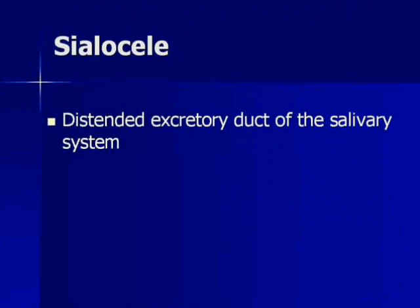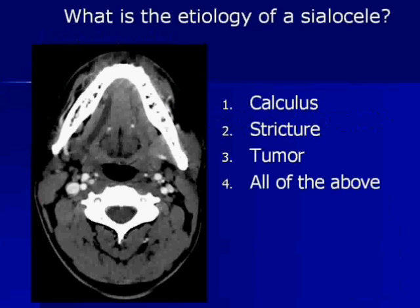A silocele is simply a distended excretory duct of the salivary system — it's just blocked up. What is the etiology of a silocele? Is it: one, calculus; two, stricture; three, tumor; or four, all of the above? Start the clock — you have 10 seconds to vote.